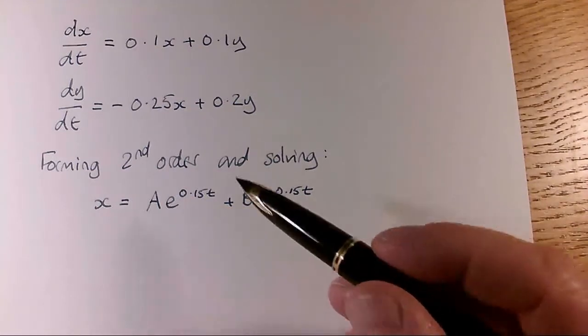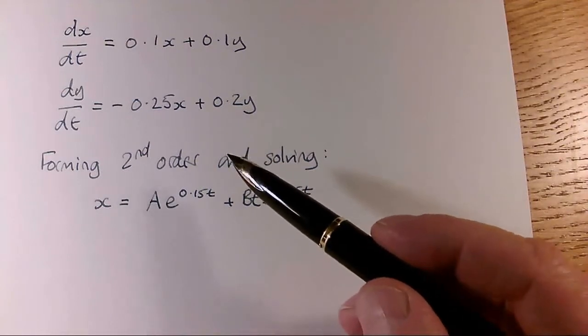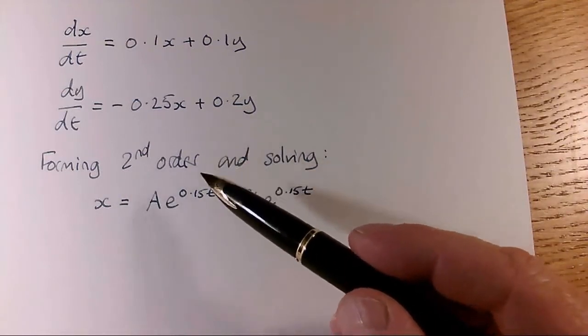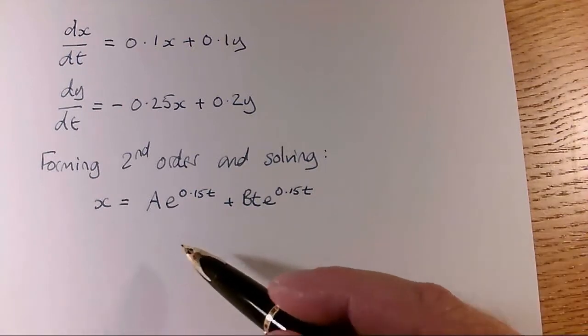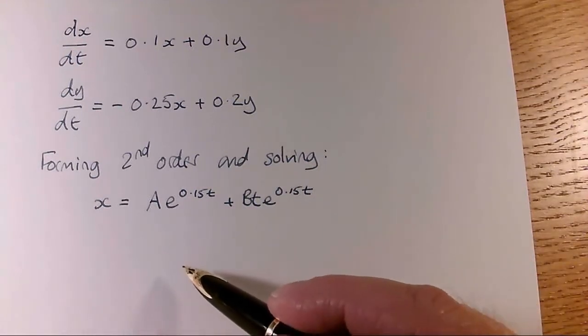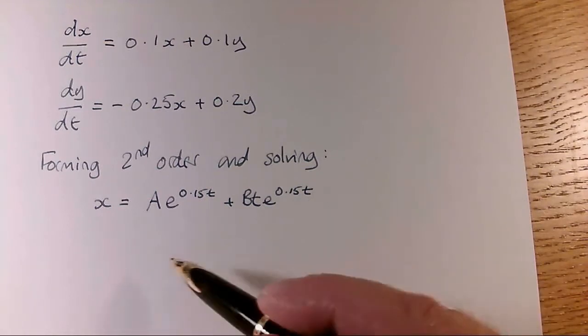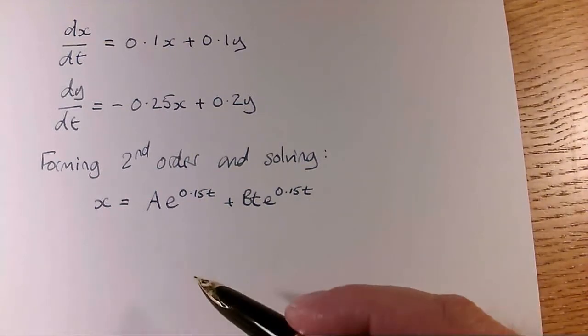And then, to find y, we could just do the same again and get a general solution for y, and that would have two arbitrary constants, which we could call c and d. And what we wouldn't see is the relationship between c and d and a and b, and there will be such a relationship.